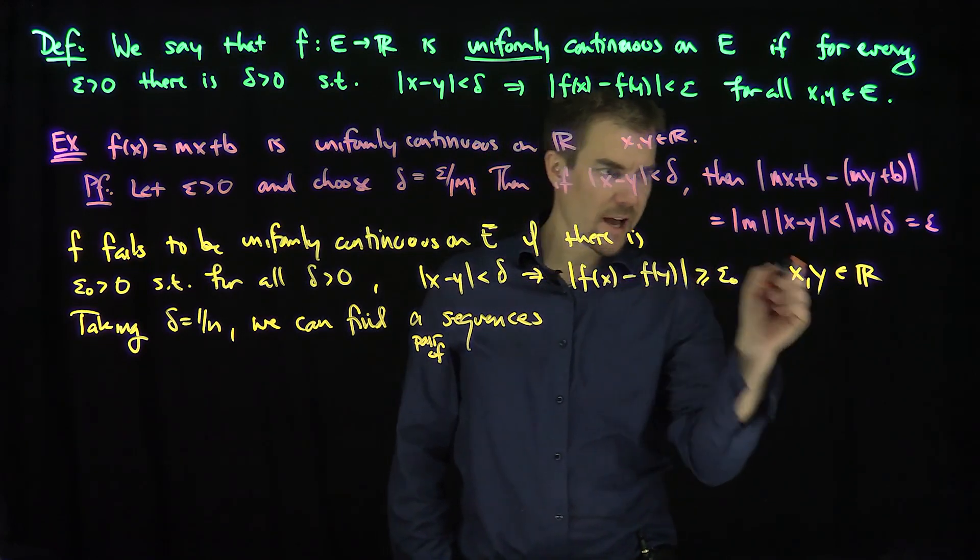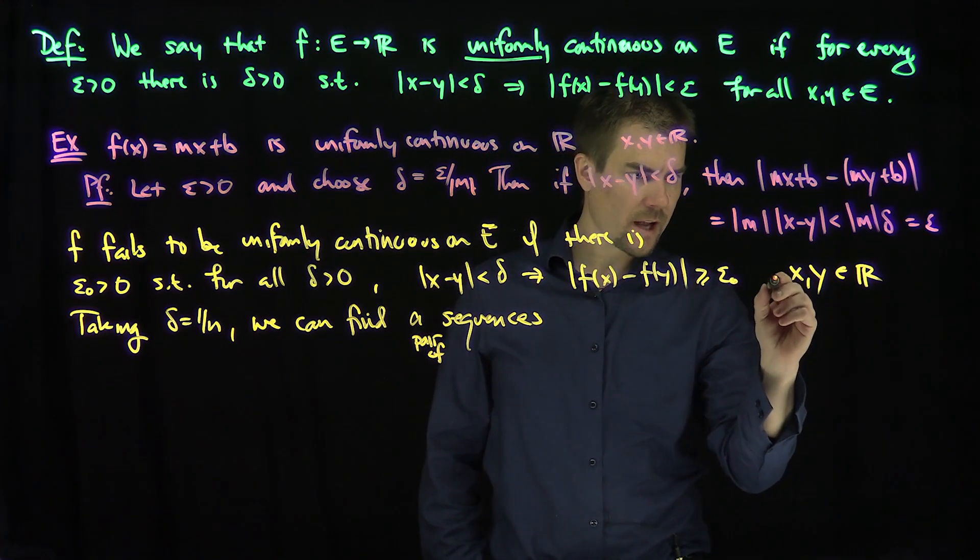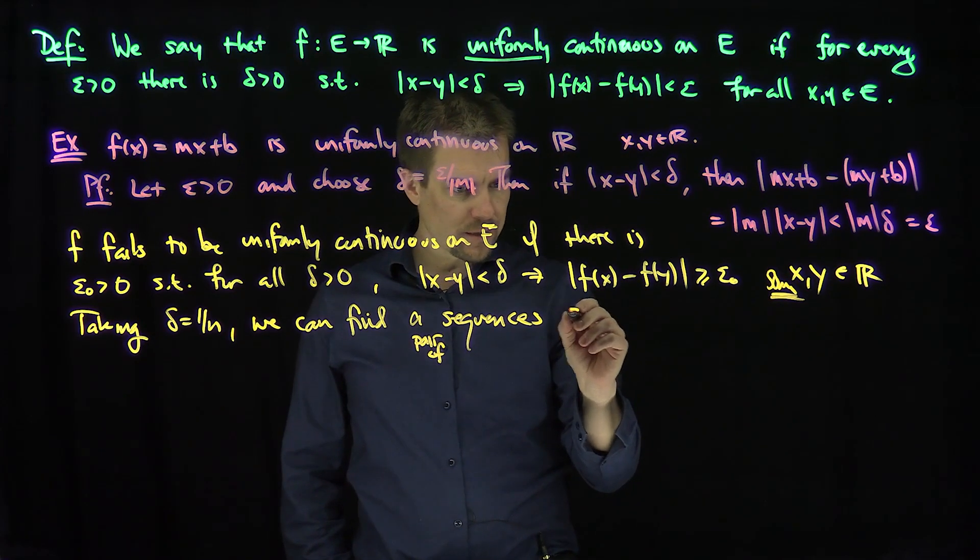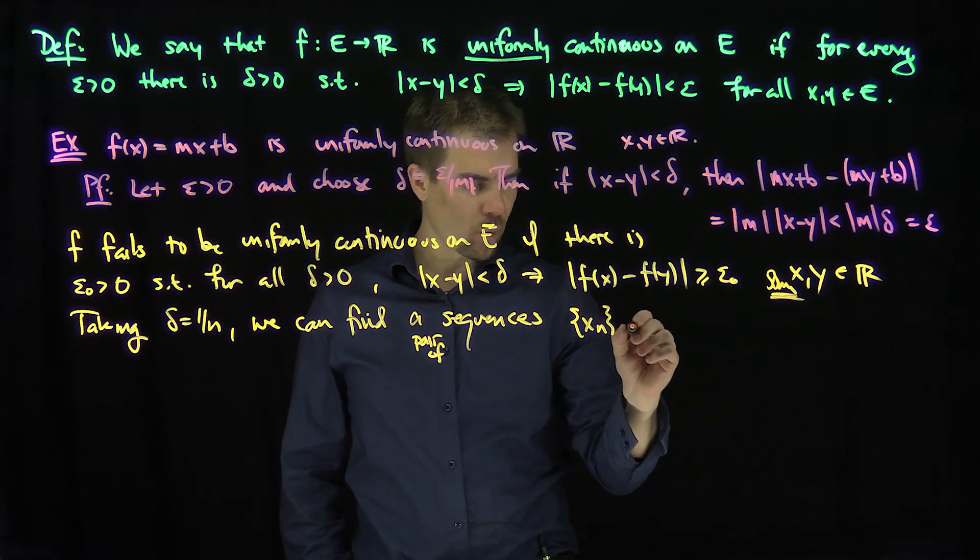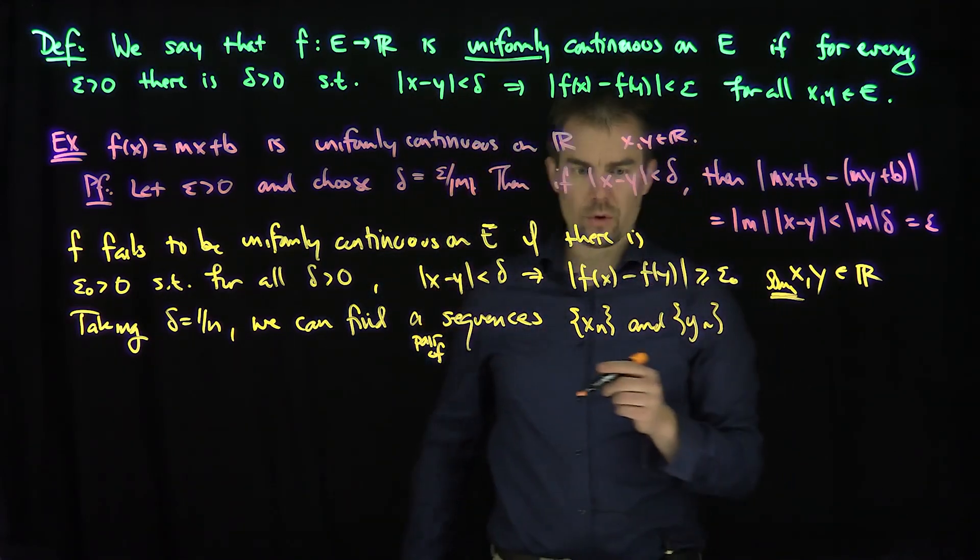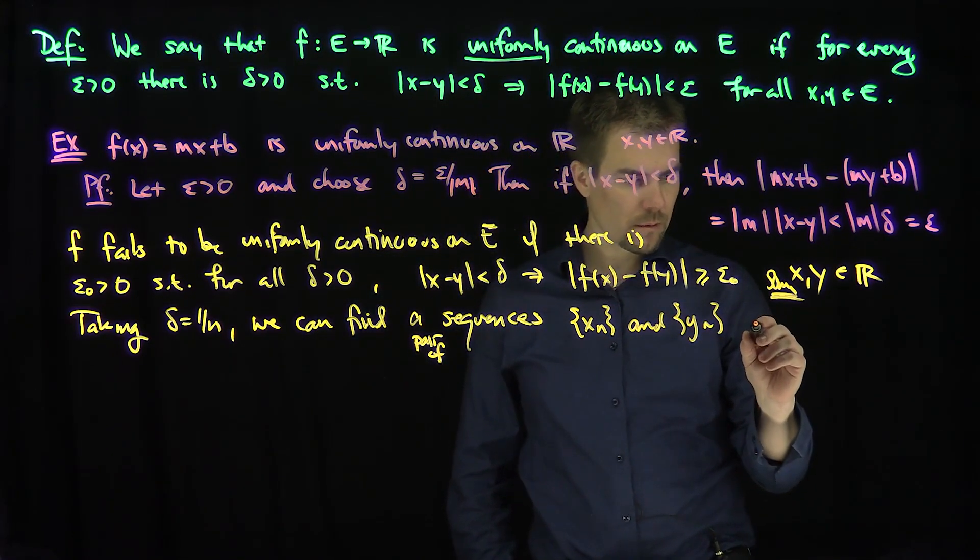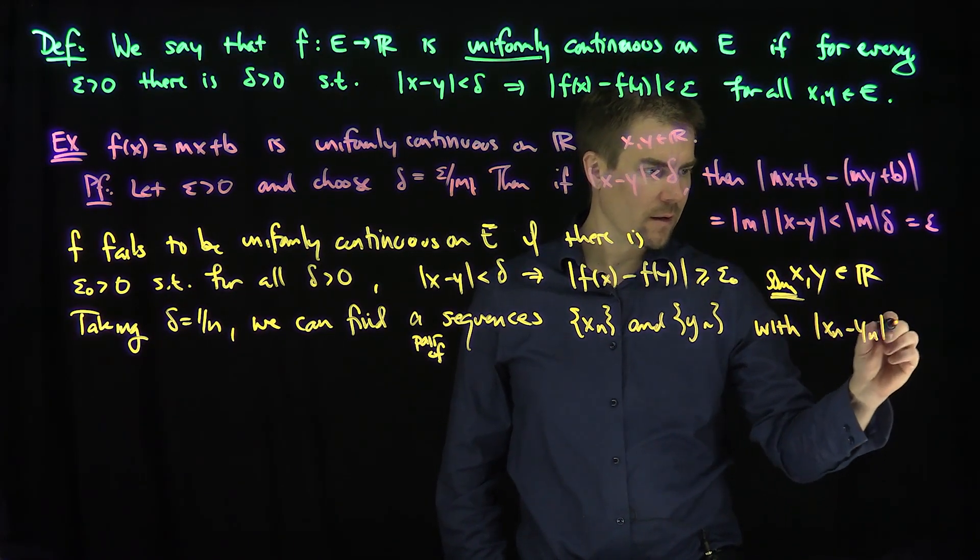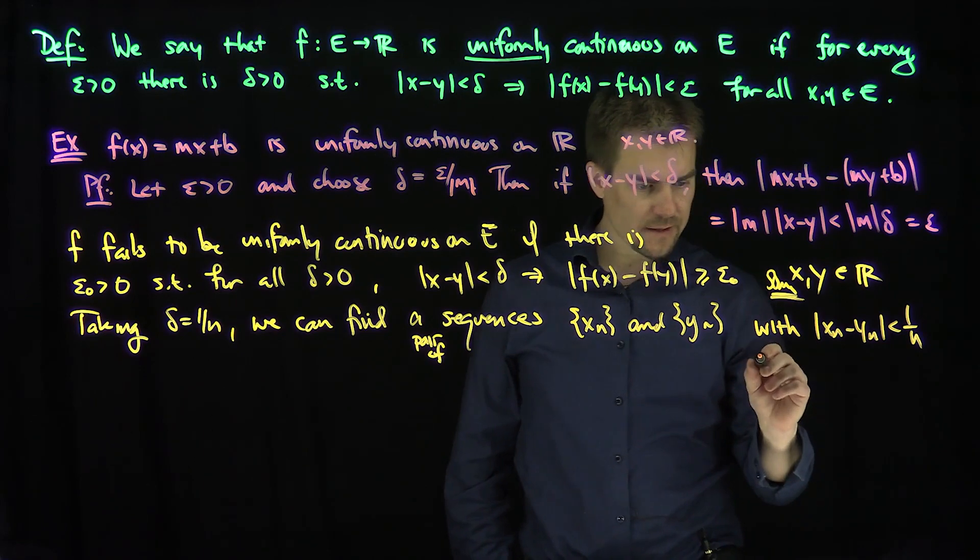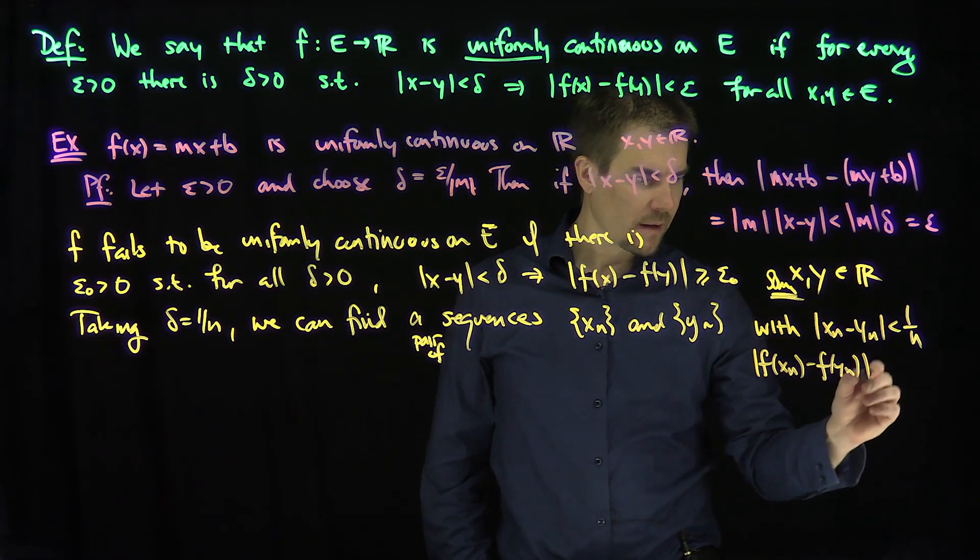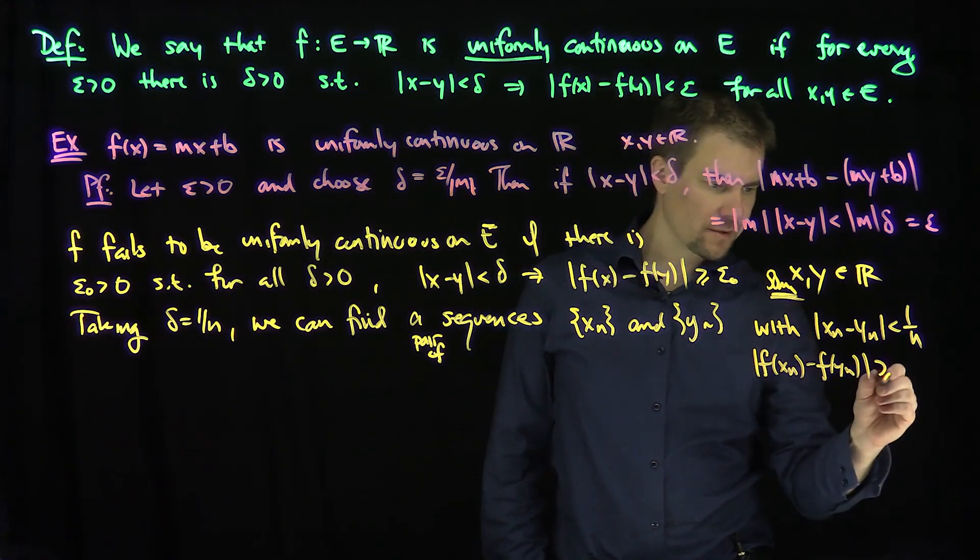some sequences x_n and y_n, with their difference less than 1 over n, x_n minus y_n less than 1 over n, and f of x_n minus f of y_n bigger than or equal to epsilon zero.